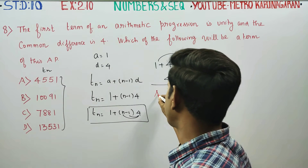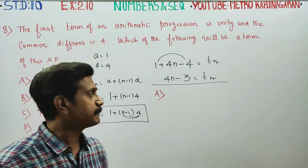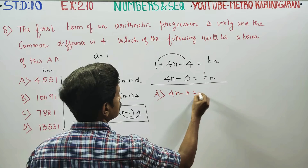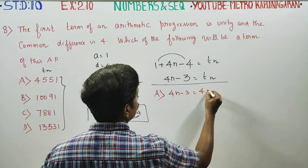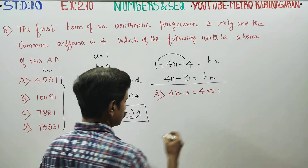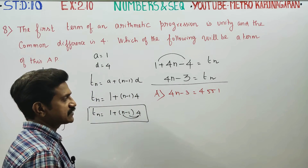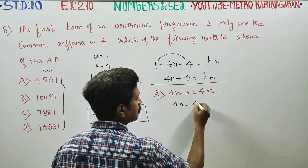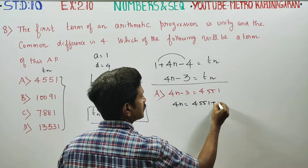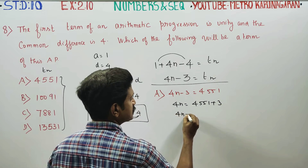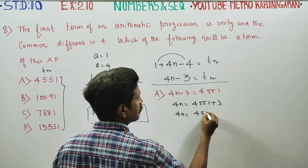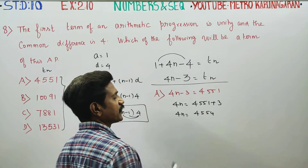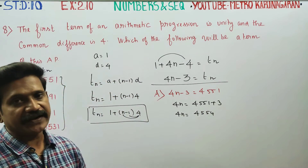Checking the first option: set 4N - 3 = 4551. Then 4N = 4551 + 3 = 4554. Now we divide: 4N = 4554 divided by 4. Checking the last two digits: 54 divided by 4. 4 × 1 = 4, balance 14; 4 × 3 = 12 — it does not divide evenly.